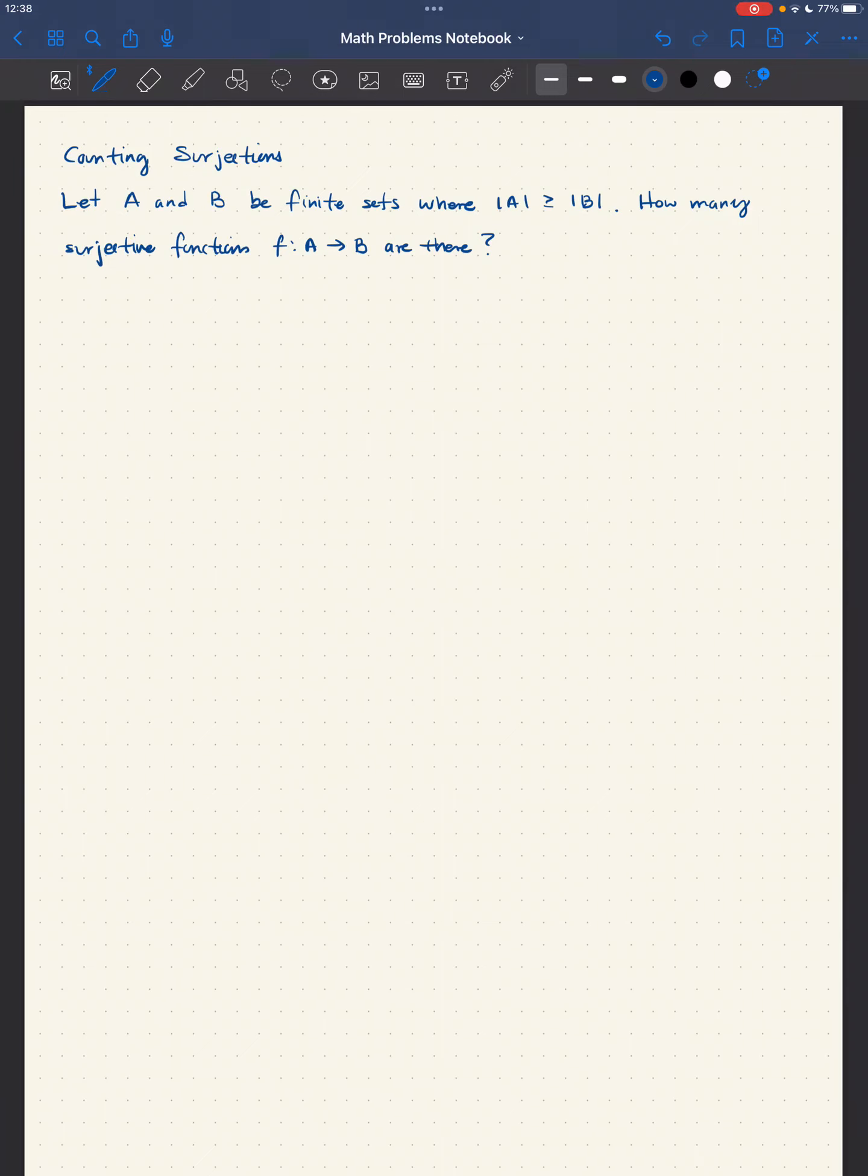Hello, this time we would like to consider the problem of counting surjective functions, and we'll start with the following setup. Let A and B be finite sets, where the cardinality of A is greater or equal than the cardinality of B. The question is, how many surjective functions from A to B are there?